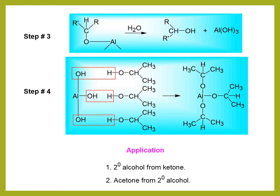In step 3, the aluminum isoalkoxide which is formed after step 2 will be hydrolyzed in the presence of water and it will be ionized. First, water will be dissociated into a proton and a hydroxyl ion. Here, in the aluminum isoalkoxide, there is a bond between oxygen and aluminum, and we know that oxygen is highly electronegative compared to aluminum.